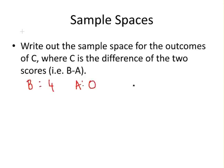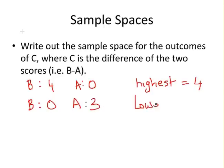So the highest possible value of this sample space is four. Consider the opposite case, where B gets zero and A gets three. The lowest possible value in this sample space is negative three.